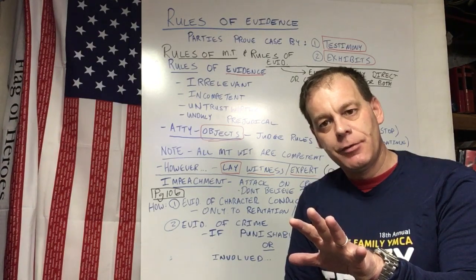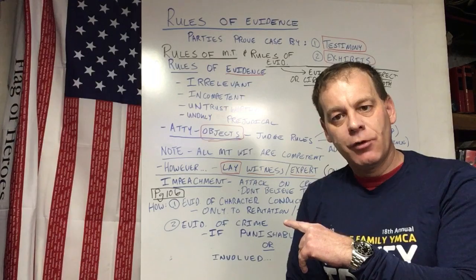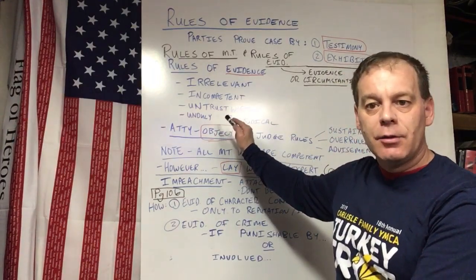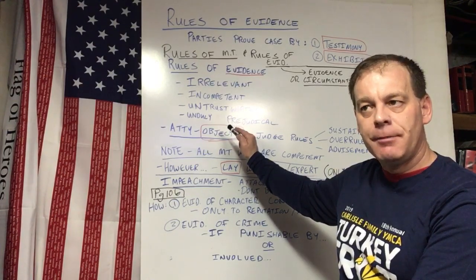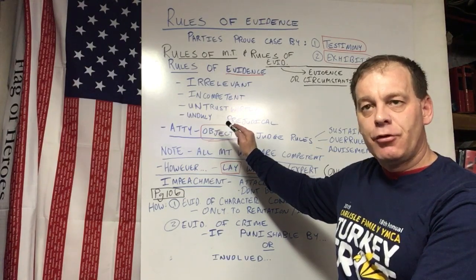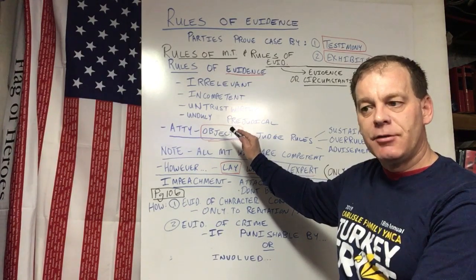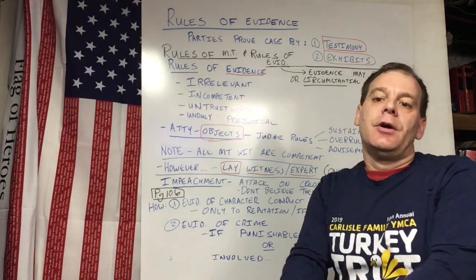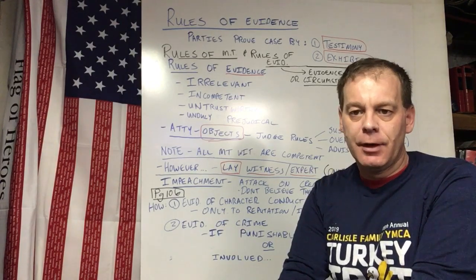As for unduly prejudicial: if you're the defense and you don't want evidence about somebody committing murder to come in because it's too unduly prejudicial — well, everything that is against the defendant that is admissible is prejudicial by its very nature. The question is whether it's *unduly* prejudicial, and that's for you to make arguments about.